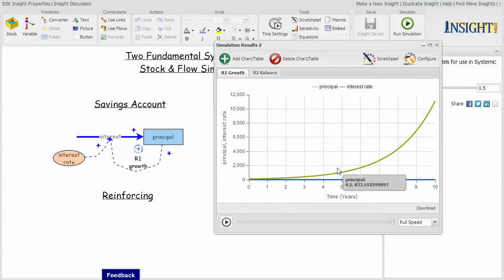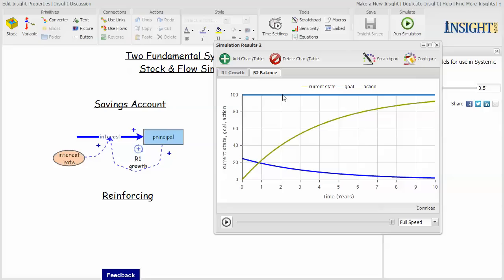This shows the growth of the principal in that account. I don't know any accounts that provide that kind of interest today. It just has to do with the formulas that are part of the model. For the balancing structure, here is the goal, here is the current state migrating toward the goal, and the action actually declining over time.